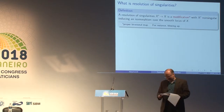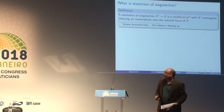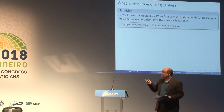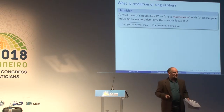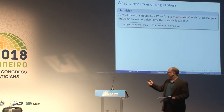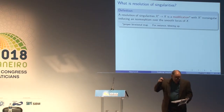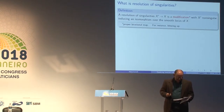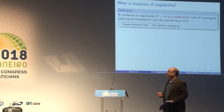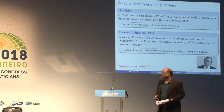Let's remind ourselves of another aspect. What is resolution of singularities? A resolution of singularities is a modification — a proper birational map, like blowing up, with the variety on top being non-singular. And I want it specifically to be an isomorphism over the open set where X is smooth.